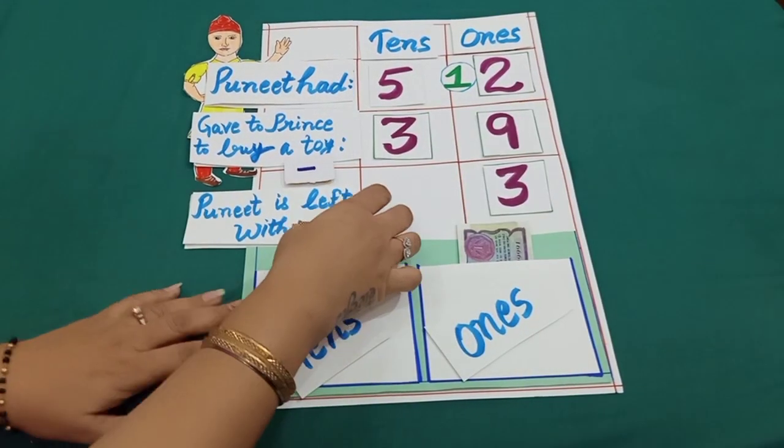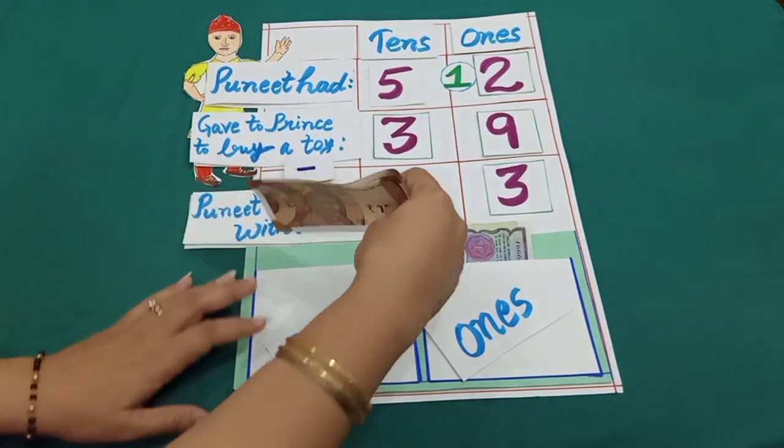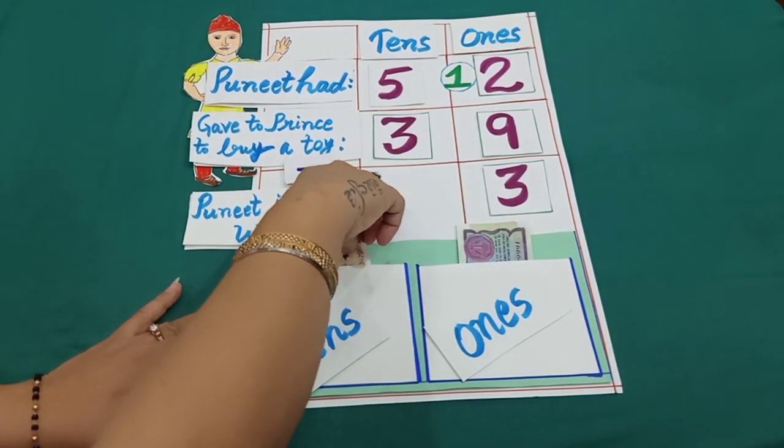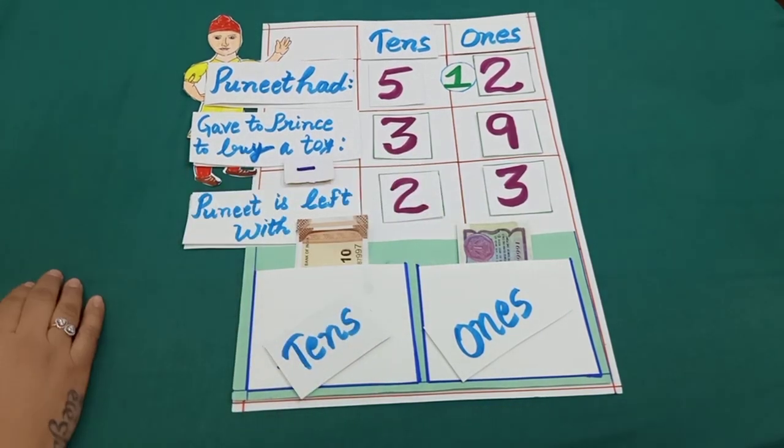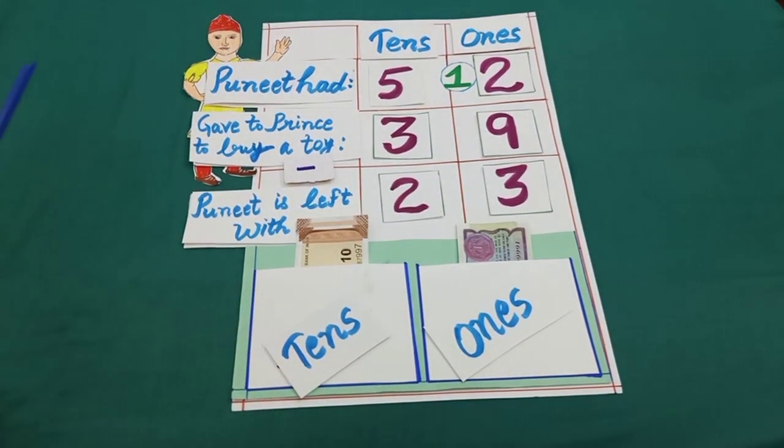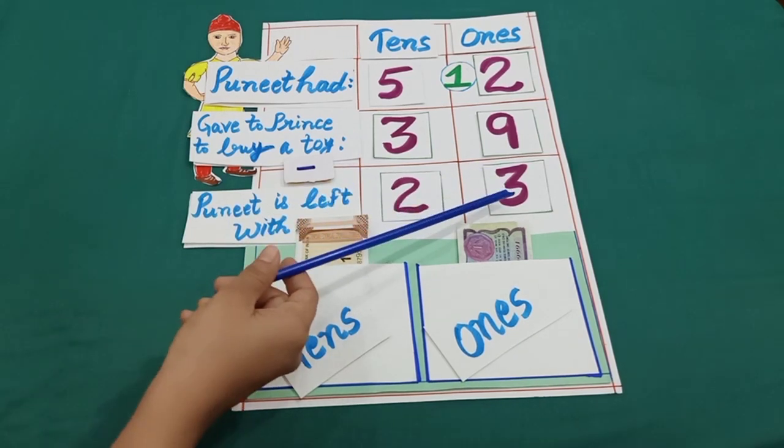And 10 rupees notes, 10, 20. 20 rupees is equal to 2 tens. So Puneet is left with 23 rupees.